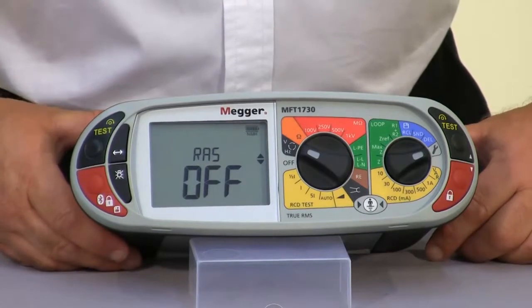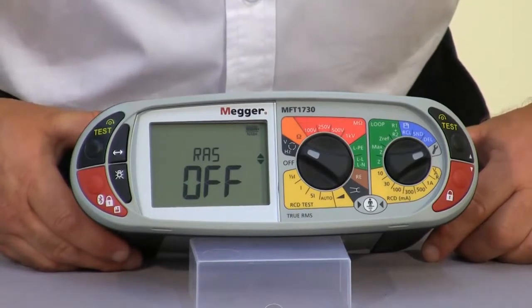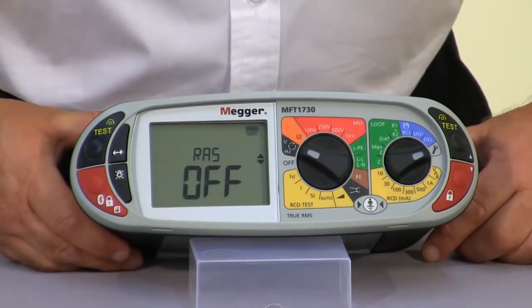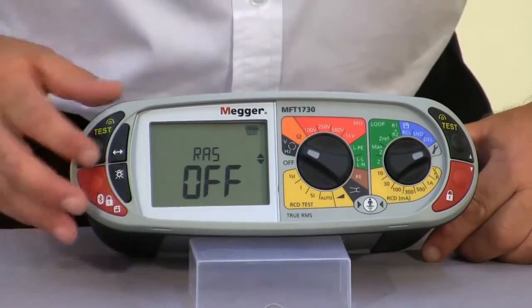The R-A-S is our RCD auto start. When we actually carry out the test, if you want the unit to start automatically when it sees the main voltage, you can turn this function on here. This defaults to the off position.